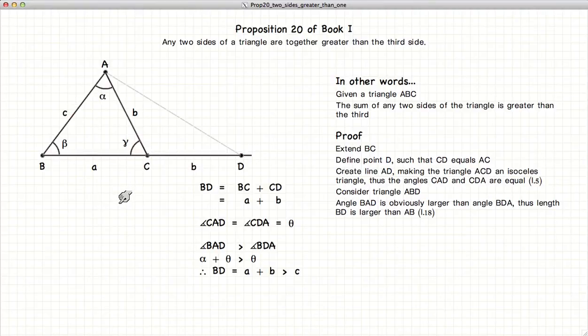Now this method can be used for any side of the triangle. So thus we have demonstrated that the sum of two sides of a triangle is always greater than the third side.